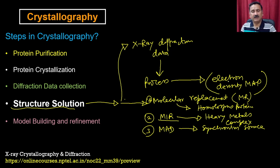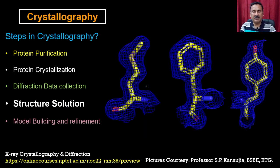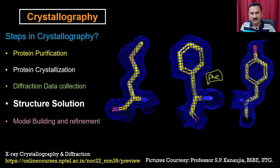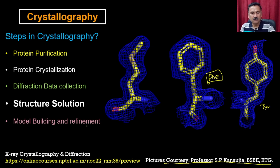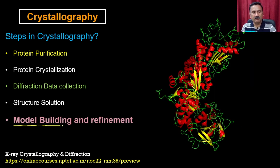After that, you are going to have the electron density map after these structure solutions. The electron density map will look like a web-like structure which is surrounding the protein. What you see here is the electron density map of the different protein side chains. This is the phenylalanine ring and then it is connected to the main chain. These pictures have also been provided by Professor Karnojiya. In the next step, where you are actually going to do the model building, you have to place the protein sequence looking at the electron density map. That's how you are actually going to refine the structure based on the information from the electron density map.